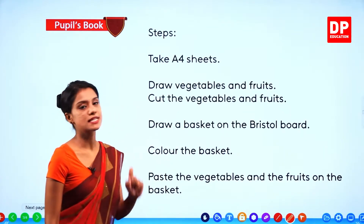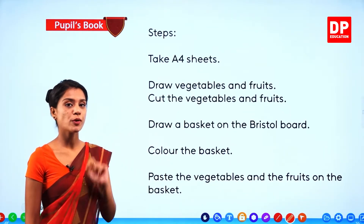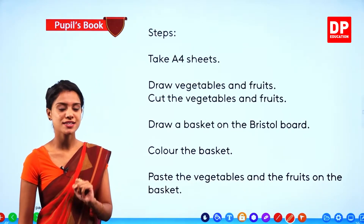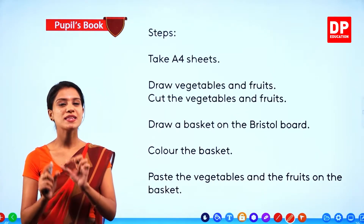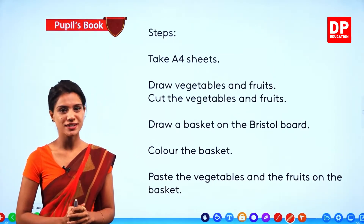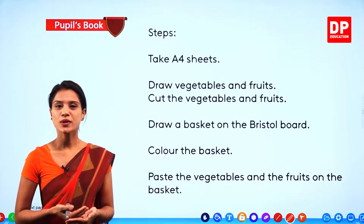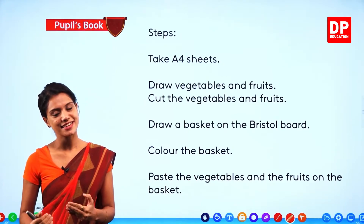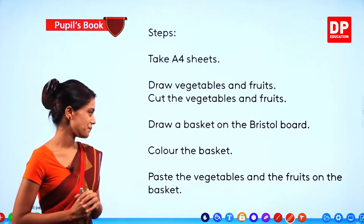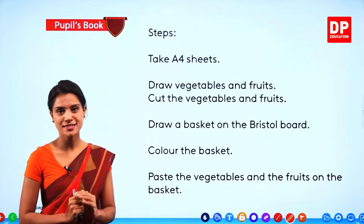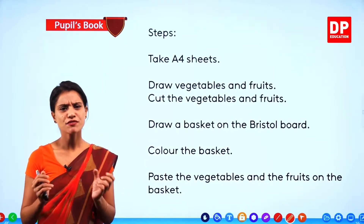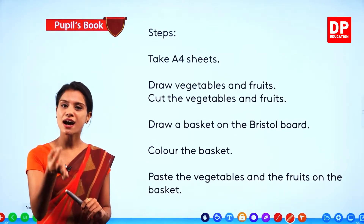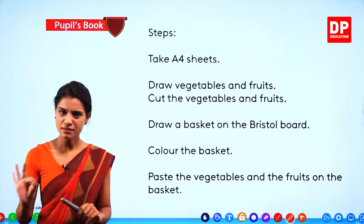Draw a basket on the bristle board. The A4 paper is for the fruits and the bristle board is for the basket. You are going to draw the basket on the bristle board. Cut it out and take it out. Then color the basket with a nice color. You can use glitter pens and color pens to decorate it.